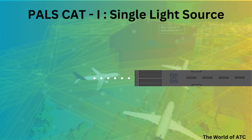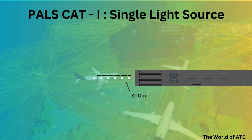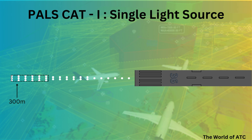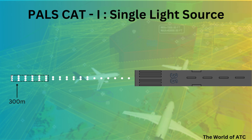In today's video, we will only be discussing the single light source of precision approach Cat 1 lighting system. It starts from the runway threshold and the first light is installed at a distance of 30 meters from the runway threshold. Since it's a single light source system, the first 300 meters will consist of centerline lights on the extended centerline of the runway with one light only. The next 300-meter portion, starting from 300 meters to 600 meters from runway threshold, the centerline lights would consist of two lights equidistant from each other. Then, the third portion — from 600 meters to 900 meters from runway threshold — will consist of three lights on the extended centerline equidistant to each other. This means the overall length of the precision approach Cat 1 lighting system is 900 meters.